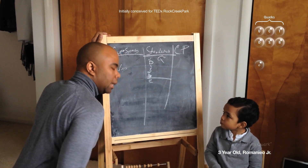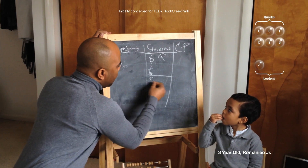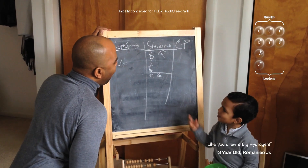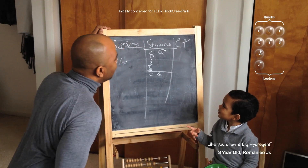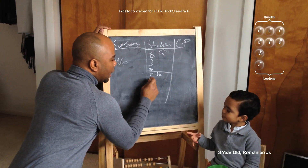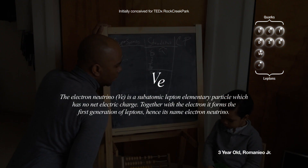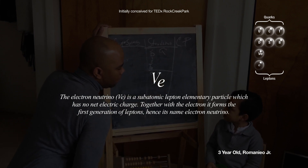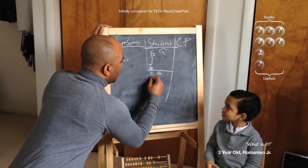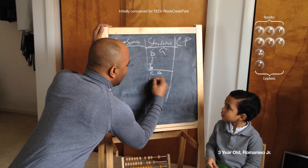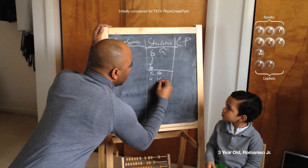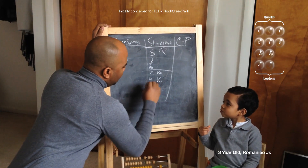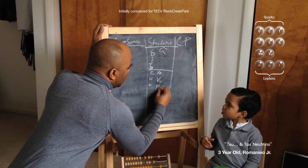Over here we have a class of particles called the leptons. The leptons include the electron, then we have the muon and the muon neutrino. Then we have the tau and the tau neutrino.